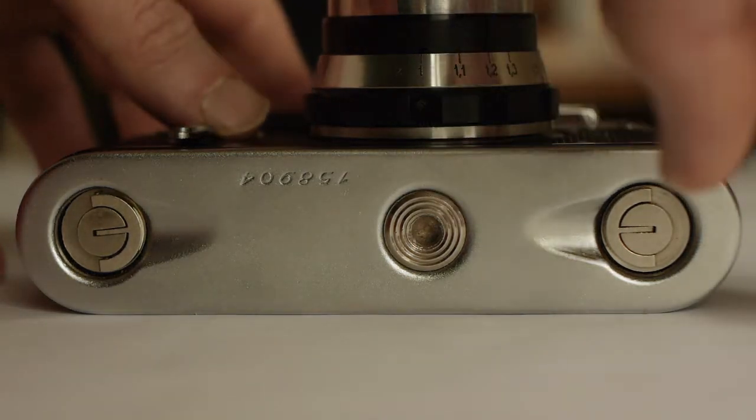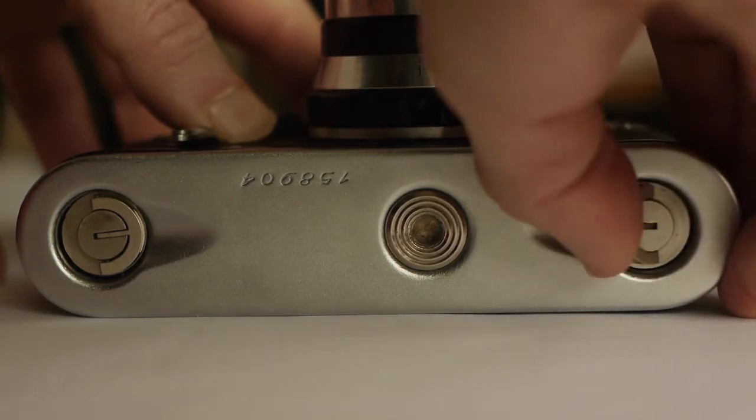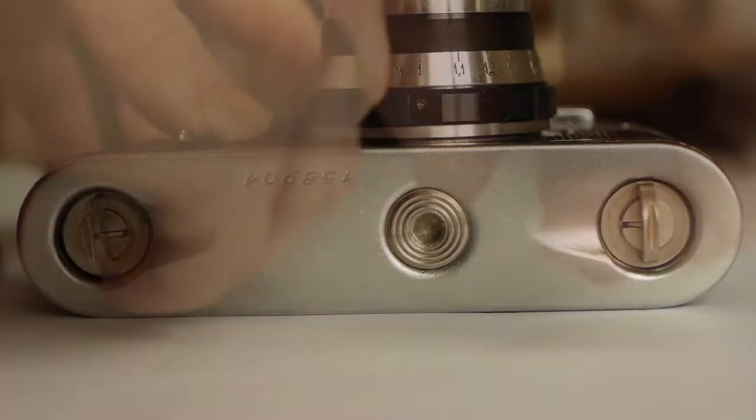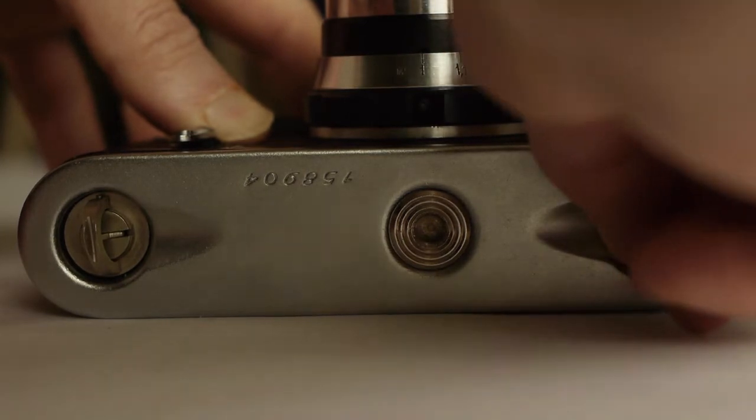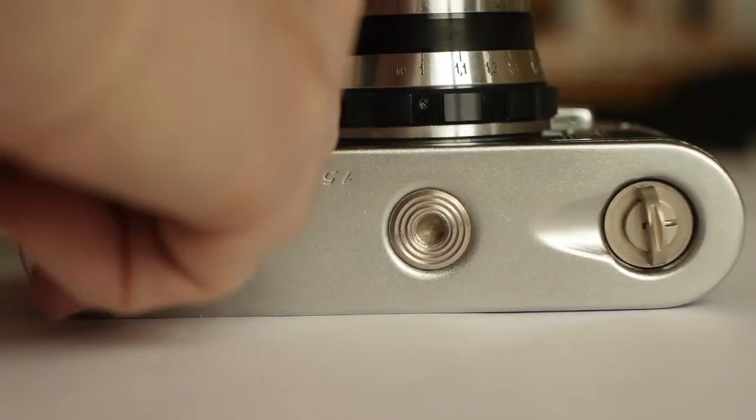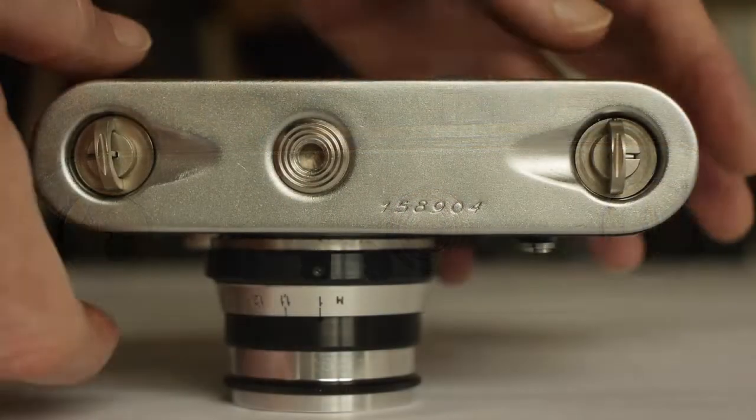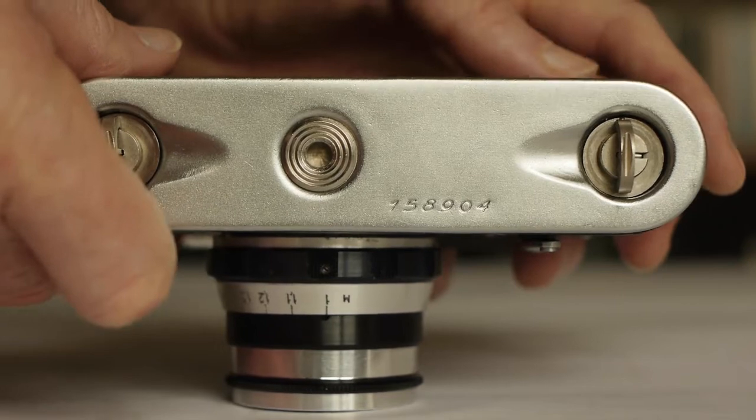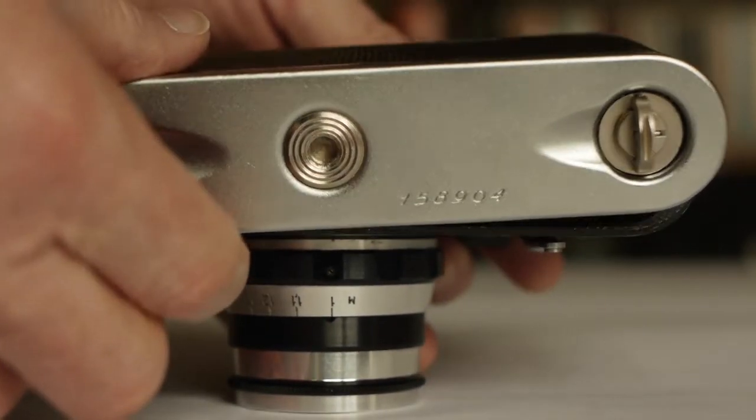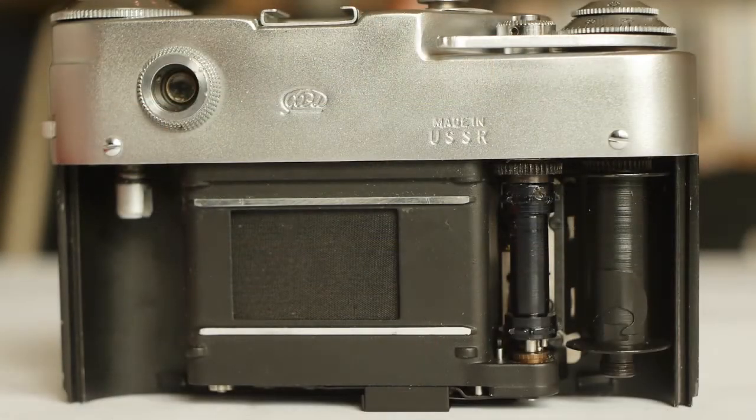Now we're going to look at film loading. The entire back comes off on this camera. To get it off, there are two clips underneath, so we raise the clips and give each one half a turn. You can then slide the back downwards slightly and take off the whole thing, after which the innards of the camera will be revealed.